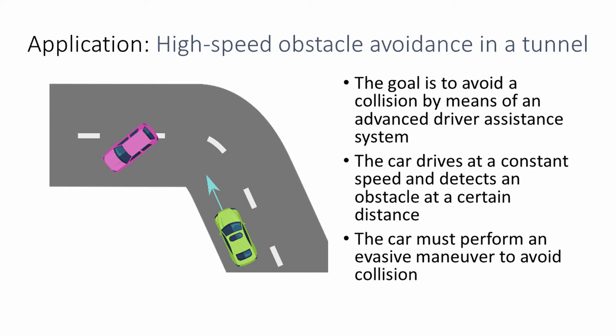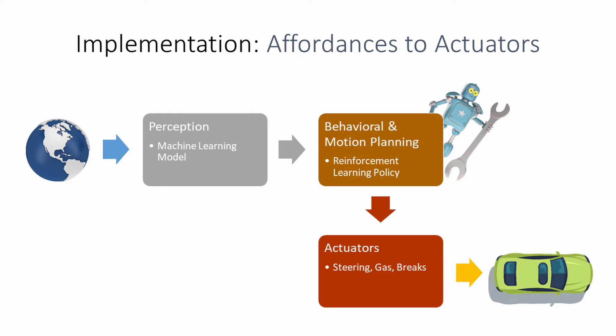The scenario is depicted here. The green car below drives at a constant speed and detects an obstacle — the other car — at a certain distance. The car must then perform an evasive maneuver to avoid collision.